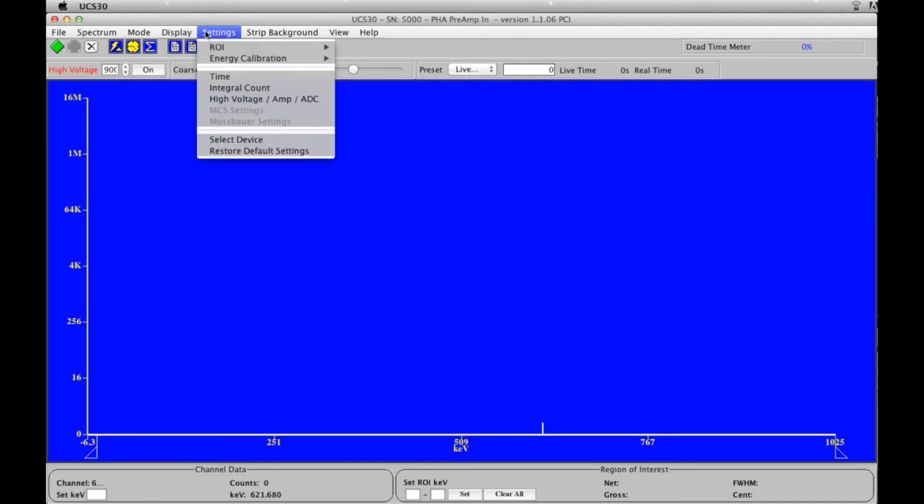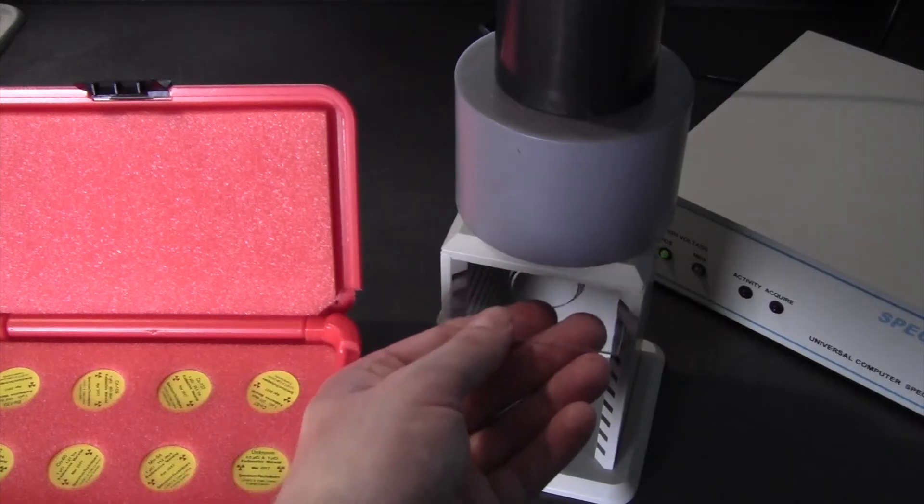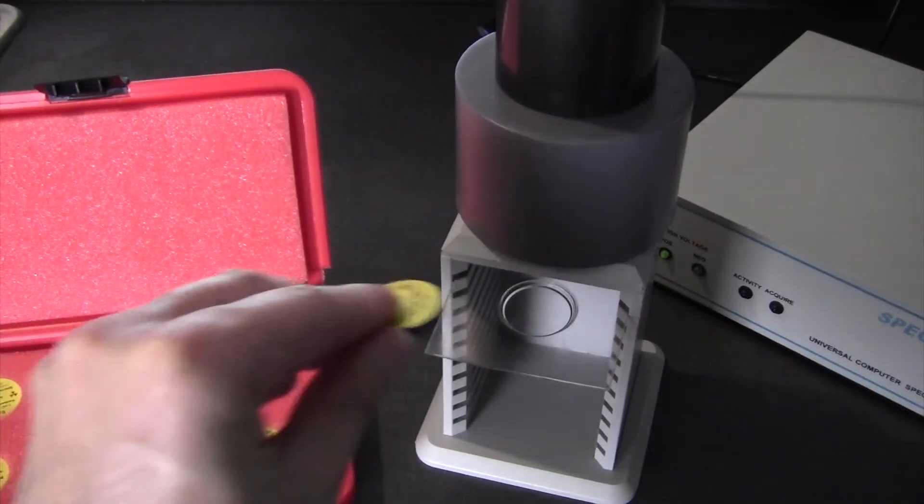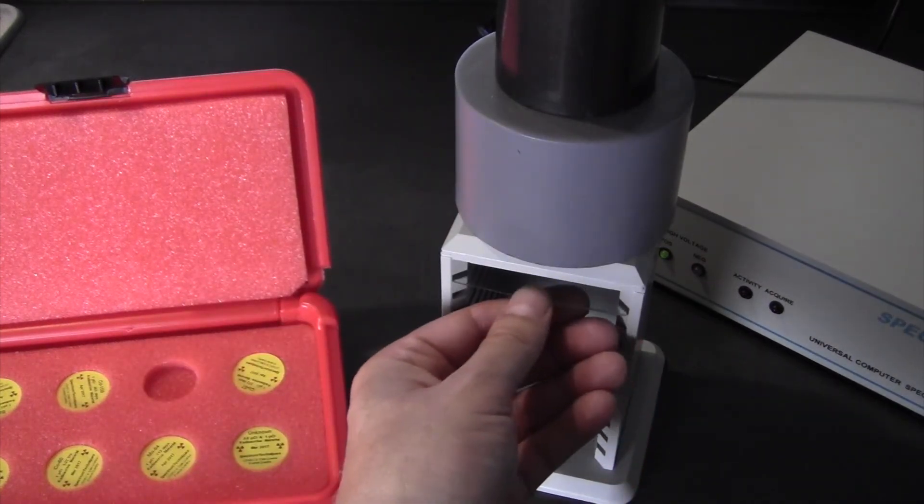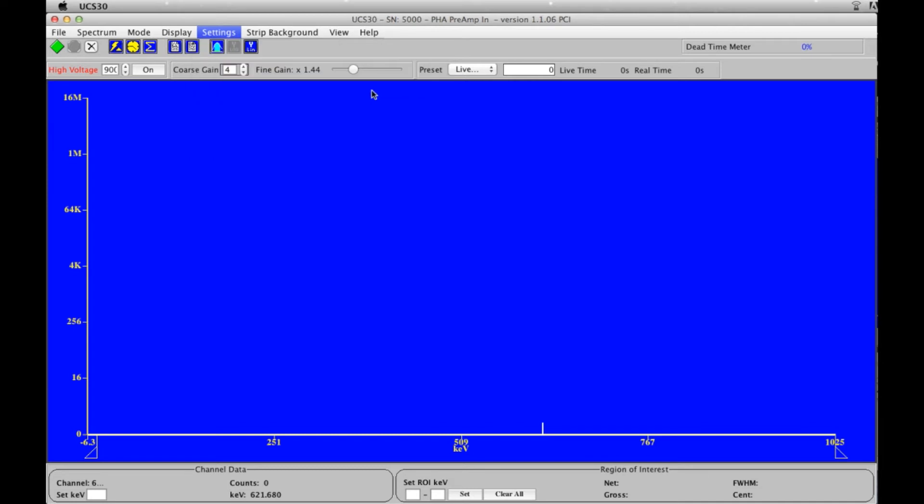Our first task at hand is to calibrate, and I recommend auto-calibration. That's for non-advanced users, and I have already placed a 1 microcurie cesium-137 source in the sample holder under the detector. Now we will auto-calibrate.